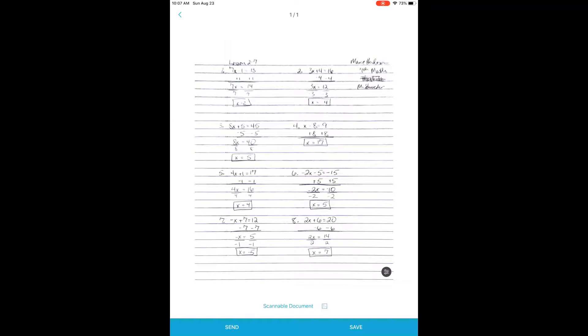But you want to make sure that you switch from a picture file to a PDF. Here across the bottom, notice it says Scannable document and then there's a little square. Instead of leaving it as the square, if you tap on it, it switches to PDF. And you definitely want to turn in PDFs to your Canvas course.